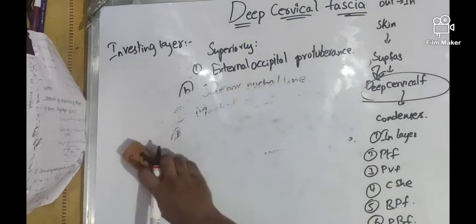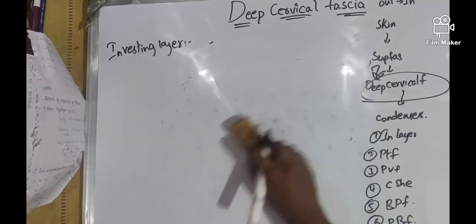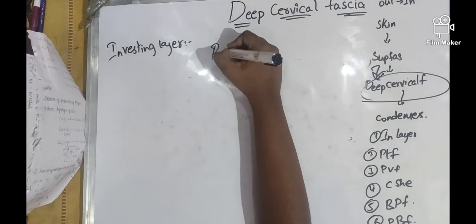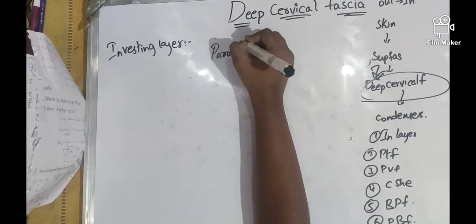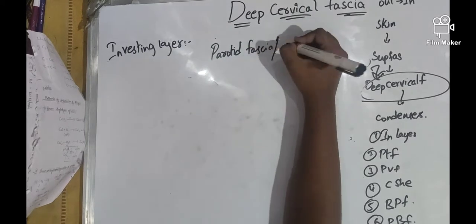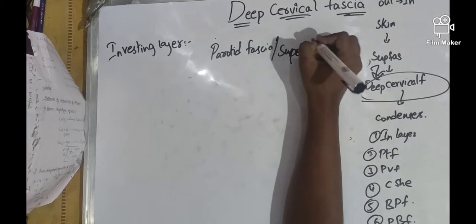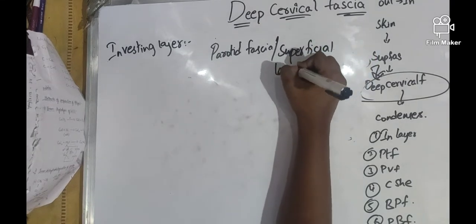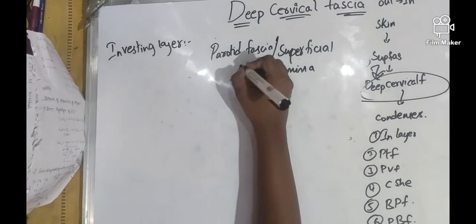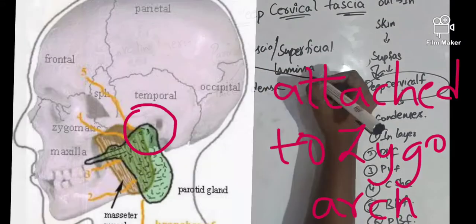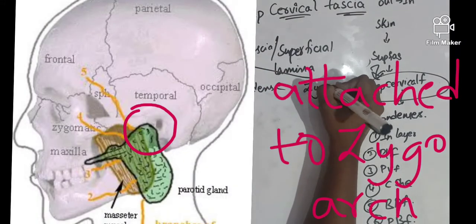We should learn about the parotid fascia because it is present superiorly to deep cervical fascia. The parotid fascia is also called the superficial lamina. The superficial lamina is thick and dense and is attached to the zygomatic arch.